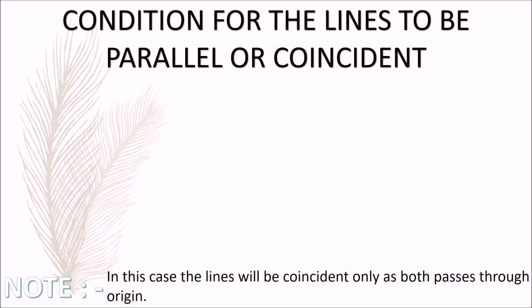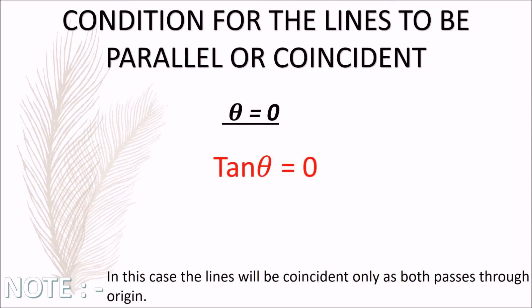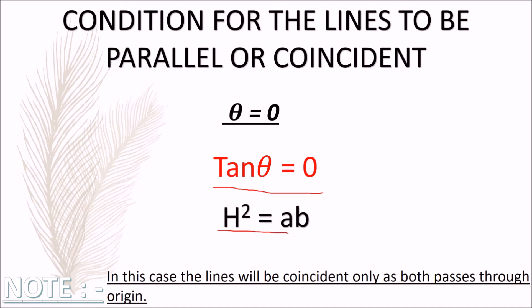Now let us learn the condition for lines to be parallel or coincident. In this case, θ = 0, so tan θ = 0. Therefore h² = ab. In this case, the lines will be coincident only, as both pass through the origin.